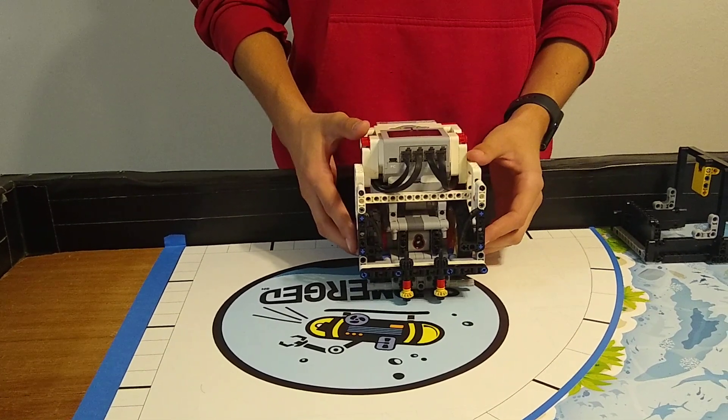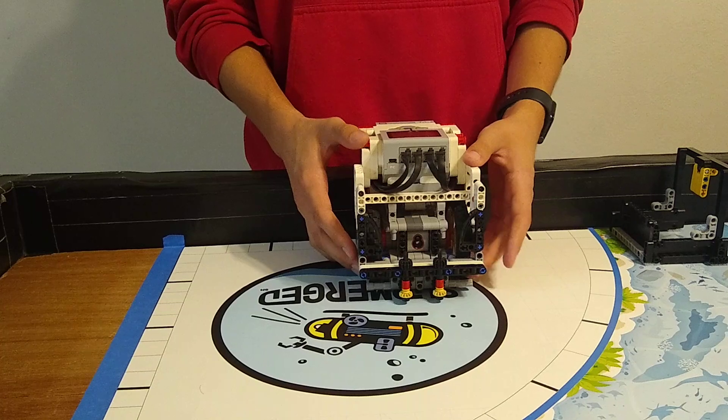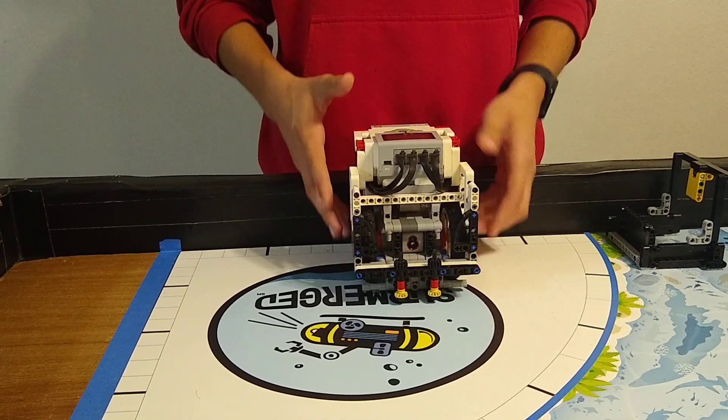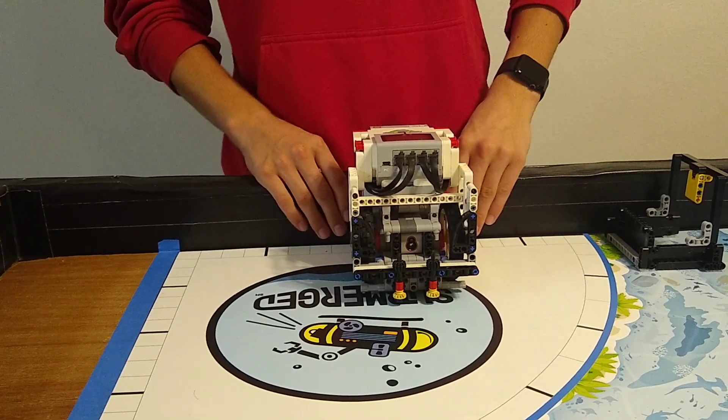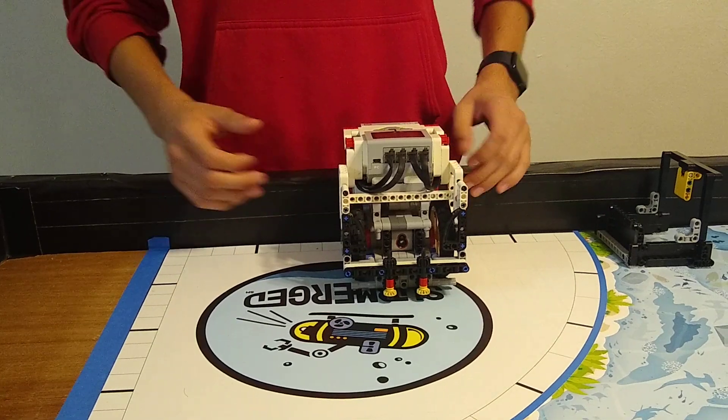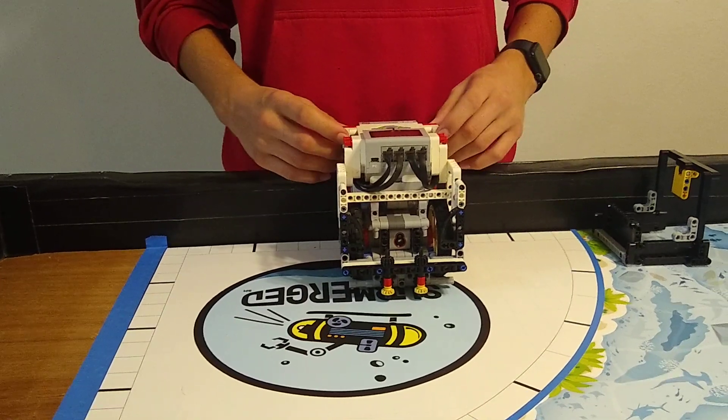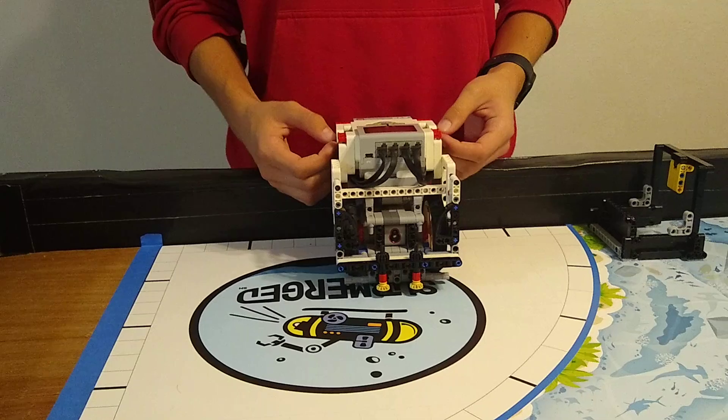This allows it to, just in case we didn't back it up all the way the first time, make sure that it's flat against the back of the board and makes the gyro reset so that it's more accurate.